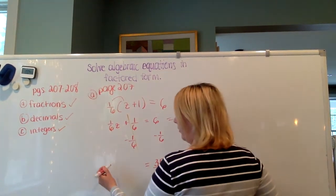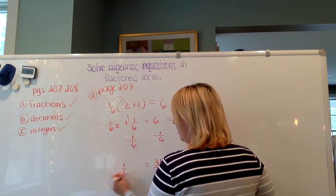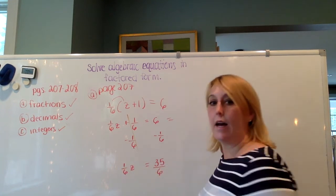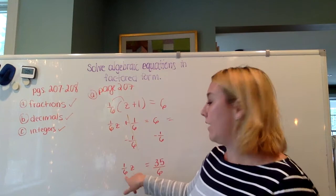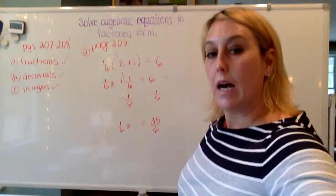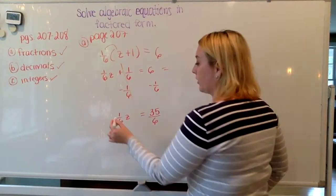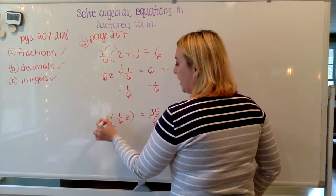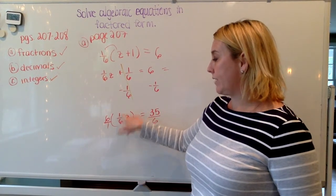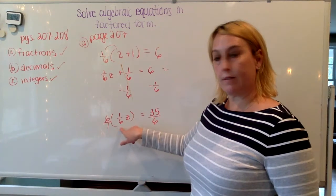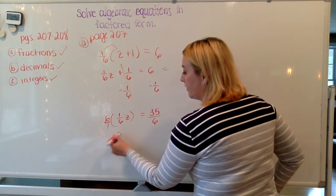And that equals 1/6 z. Now, to get this z on its own, to isolate it when it has a fractional coefficient, I need to multiply that fractional coefficient by its reciprocal. Because 6 times 1 is 6, and 1 times 6 is 6. And 6 over 6 z is the same as saying 1z.